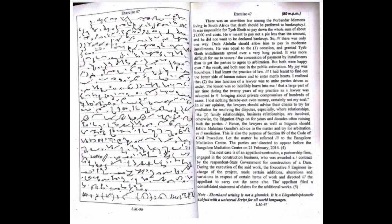The next case is of an appellant contractor, a partnership firm engaged in the construction business, who was awarded a contract by the respondent state government for construction of a dam. During the execution of the said work, the executive engineer in charge of the project made sudden additions, alterations and variations in respect of certain items of work and directed the appellant to carry out the same also. The appellant filed a consolidated statement of claims for the additional works.